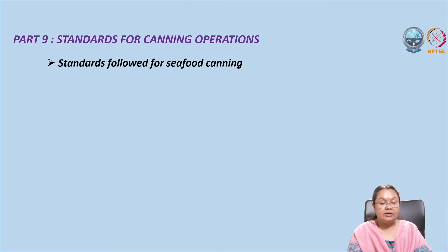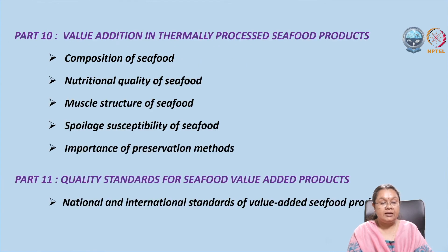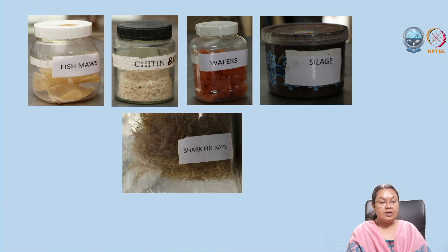In part nine, we will discuss SOPs in the canning industry individually for each product. In part ten on value addition, we will discuss the composition, nutritional quality, muscle structure, and spoilages of seafood, as well as methods of preservation to increase shelf life. In the last part, we will discuss quality parameters, including national and international standards of seafood products. This is an overview of the entire course.